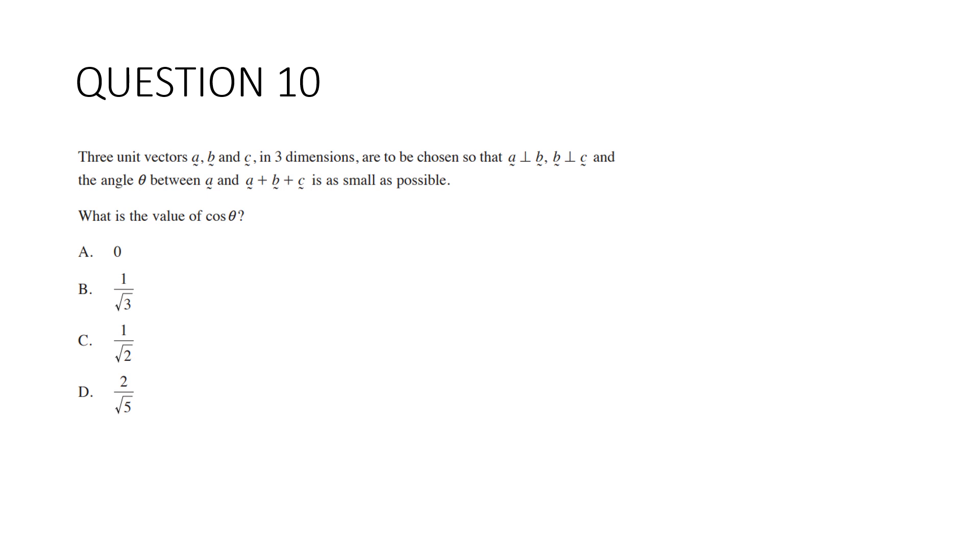Question 10. Three unit vectors a, b, and c in three dimensions are to be chosen so that a and b are perpendicular, b and c are perpendicular, and the angle θ between a and a plus b plus c is as small as possible. What is the value of cos θ? I absolutely love this question. I went down a rabbit hole with the dot product, but when I started adding the vectors and looking at it graphically or geometrically, you just need to use trig. And properties of quadrilaterals.